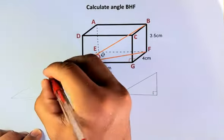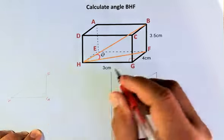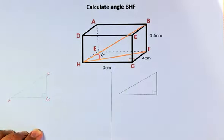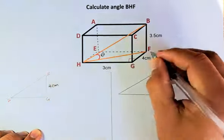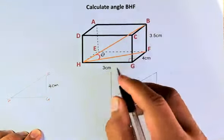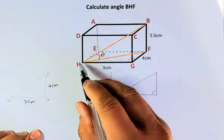So that is what we're going to calculate. We're going to label that as F, G and H, and that is 90 degrees. Then we're going to put in the numbers there. FG is 4cm and HG is 3cm.